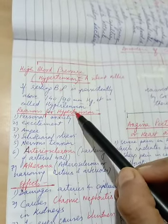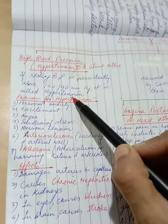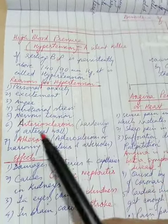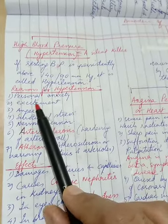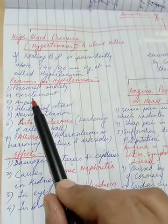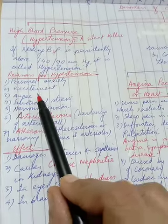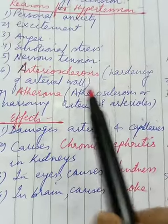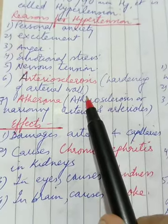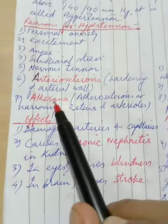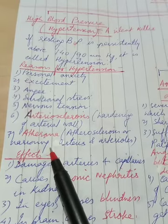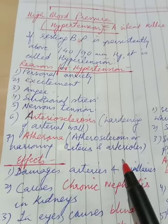Mostly we see nowadays that it is seen in more than 10 percent of the middle aged people. What are the reasons for hypertension? There are many. First it is personal persistent anxiety, then it is anger, excitement, emotional stress, nervous tension and a technical term what we call as arteriosclerosis which means hardening of the artery walls and another term where we call as atheroma.